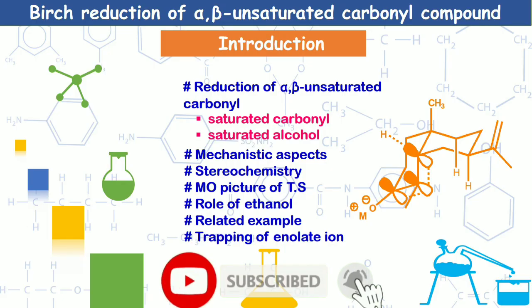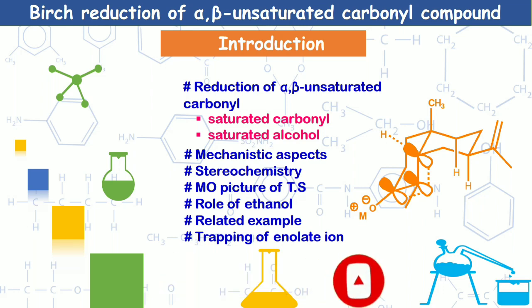This is probably the last lecture on Birch reduction, and it is all about the reduction of alpha-beta unsaturated carbonyl compounds. A specific example is cited where, by modulating the reaction conditions, you can get either a saturated ketone or saturated alcohol as your major product. Each step of the mechanism is explored and the stereochemical outcome is provided using molecular orbital theory.